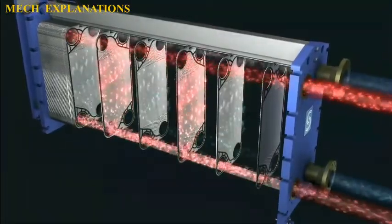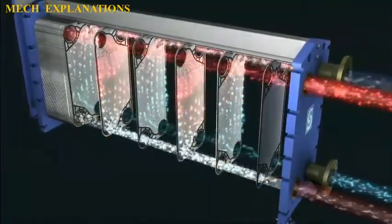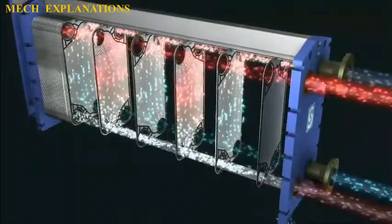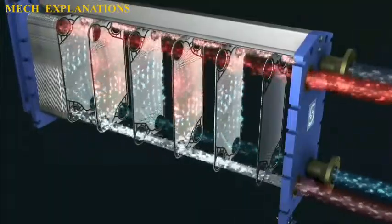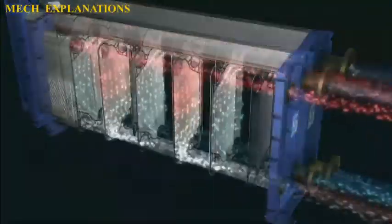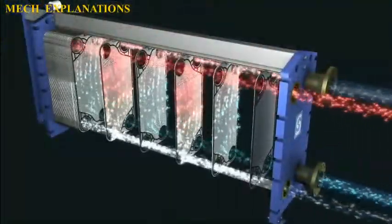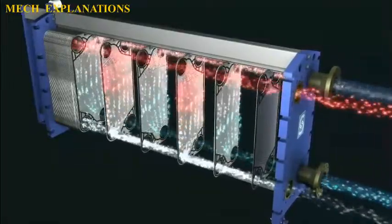Evaporative: While these remain the least popular choice, evaporative condensers can be used inside or outside of a building and under typical conditions, operate at a low condensing temperature. Typically these are used in large commercial air conditioning units.